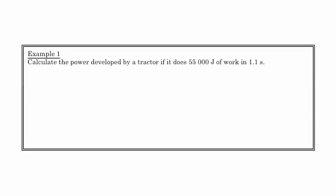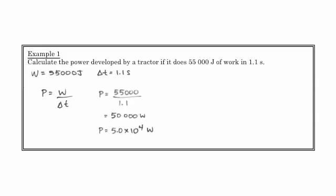So here's an example. Let's calculate the power developed by a tractor if it does 55,000 joules of work in 1.1 seconds. So what we know is that we've got 55,000 joules, 1.1 seconds, and power is simply work over time. So if you take 55,000 and divide by 1.1, we come up with 50,000 watts. So this tractor would have developed a power of 50,000 watts in this time segment of 1.1 seconds. And we can use significant figures to say 5.0 times 10 to the 4. Basically what this gets to is it talks about how much work is being done in a certain amount of time. And that's the power that's developed by a device.